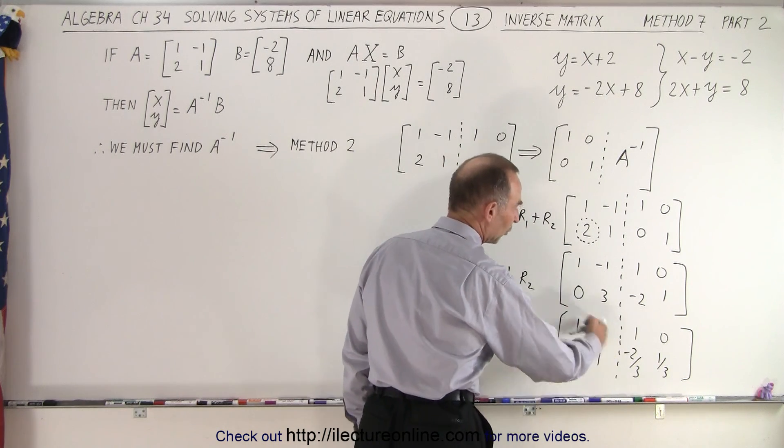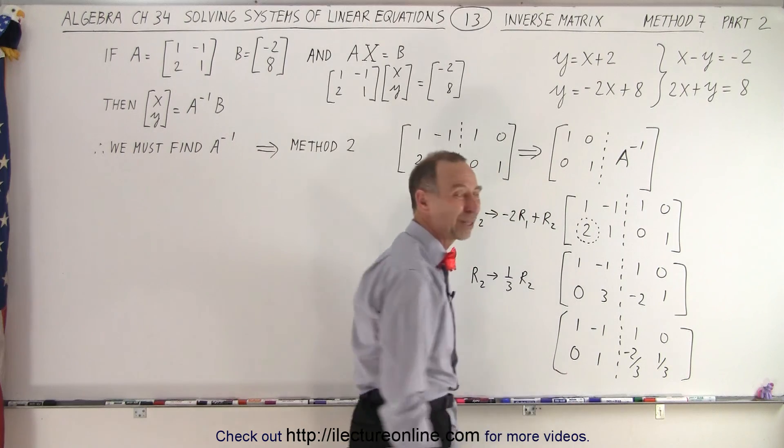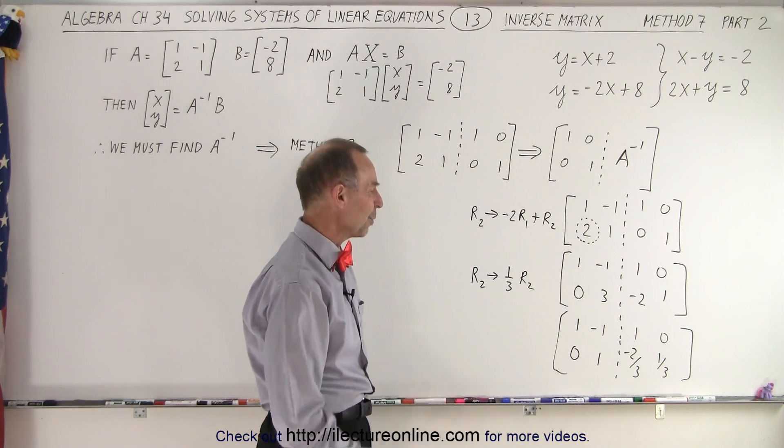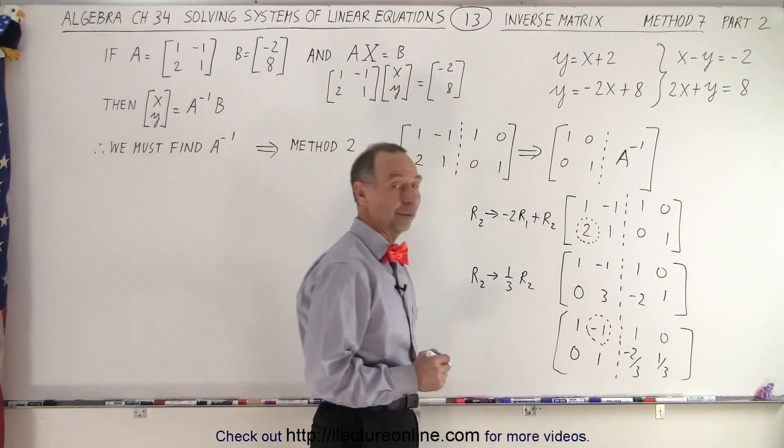So notice, we're almost there. We have 1's across diagonal, a 0, but we have a negative 1 there. We want that negative 1 to become a 0.